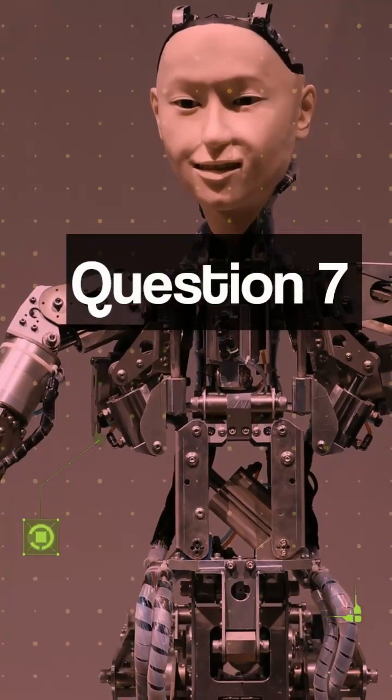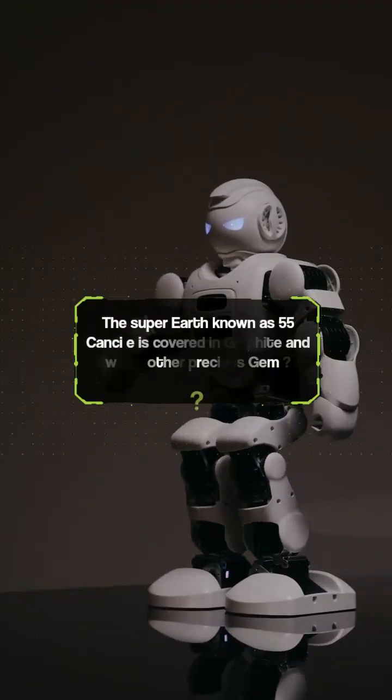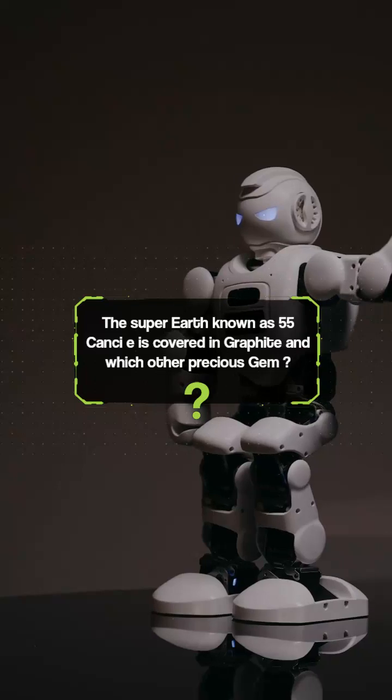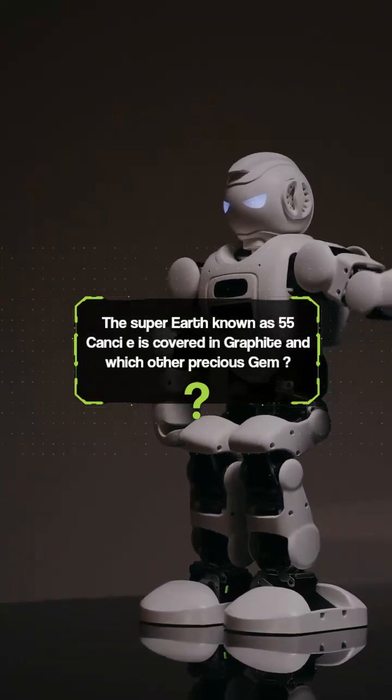Question 7. The super earth known as 55 Cancri is covered in graphite and which other precious gem? Diamonds.